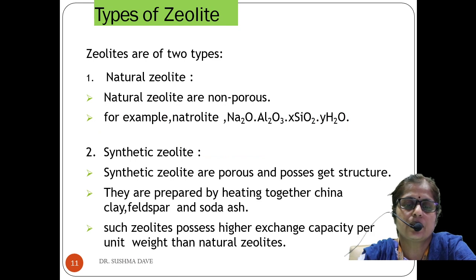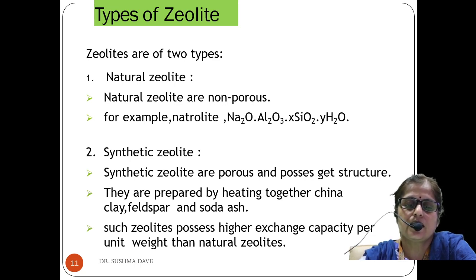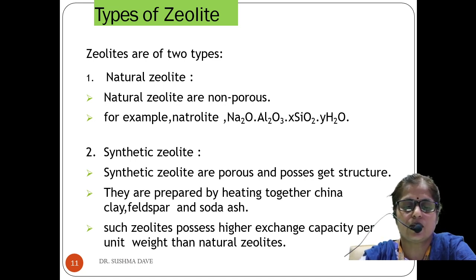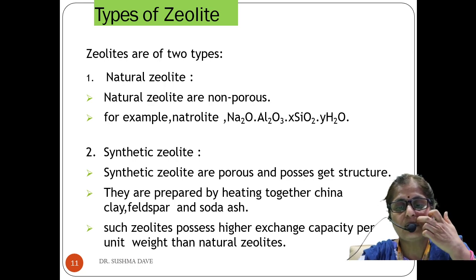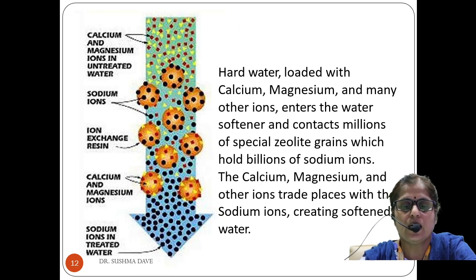Zeolites are of two types: natural and synthetic. Natural zeolites have the property of non-porosity, whereas synthetic zeolites are prepared by heating china clay, feldspar, and soda ash together. Synthetic zeolites have the property of porosity and possess a structure with a greater ion-exchanging capacity.